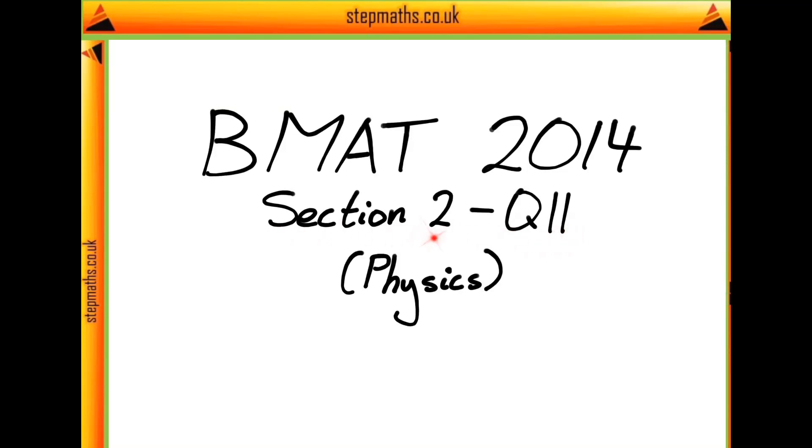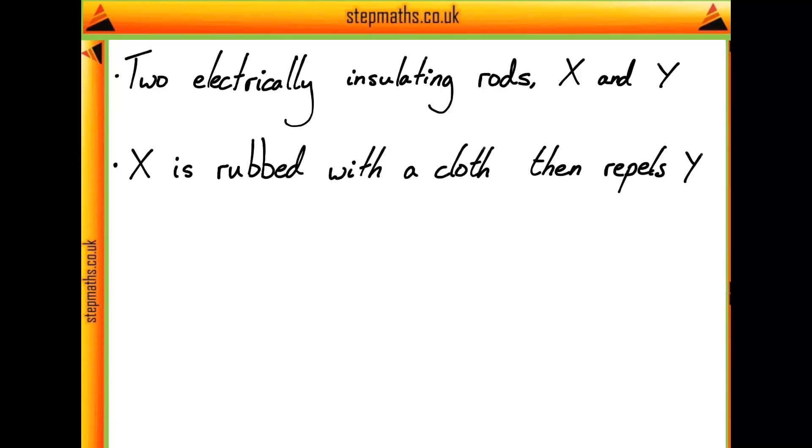Here we're going to look at question 11 from section 2 of the BMAT 2014 paper. So in this question, we're told we have two electrically insulating rods, X and Y. We're told that rod X is rubbed with a cloth, and then after this it repels rod Y.